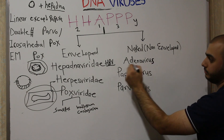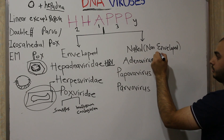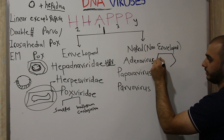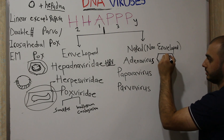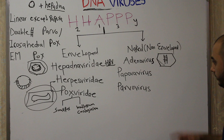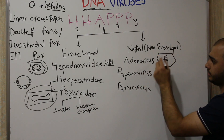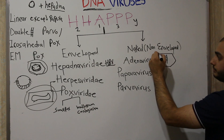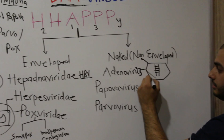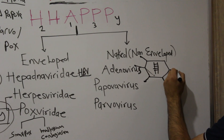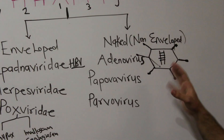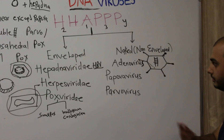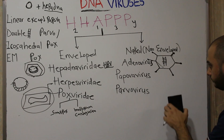Moving on to Adenovirus: all DNA viruses are icosahedral, and Adenovirus is not an exception. It has linear double-stranded DNA and is non-enveloped (naked). The specific feature of Adenovirus is that it has antennas (fiber projections). In high-yield exams, if you see a virus with antennas and double-stranded DNA, the answer is Adenovirus. These antennas play a role in toxicity, antigenicity, and other functions.